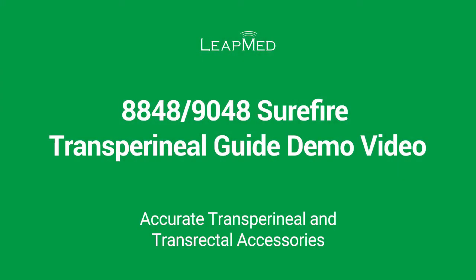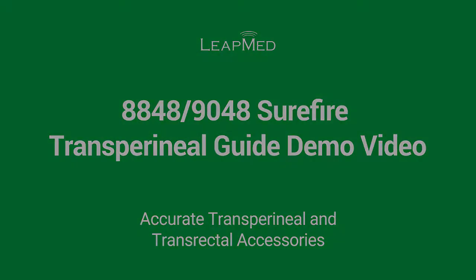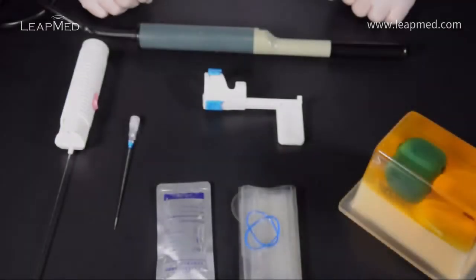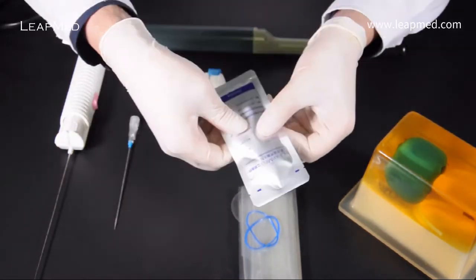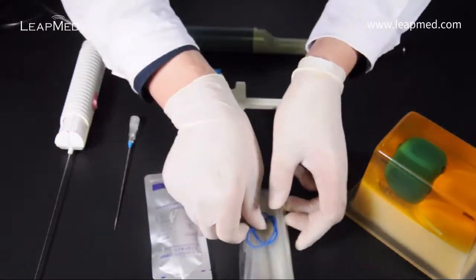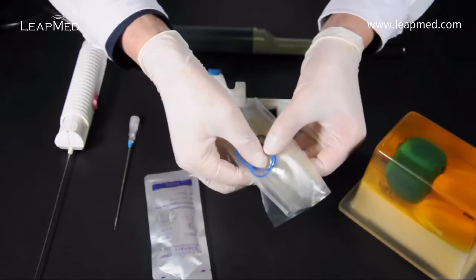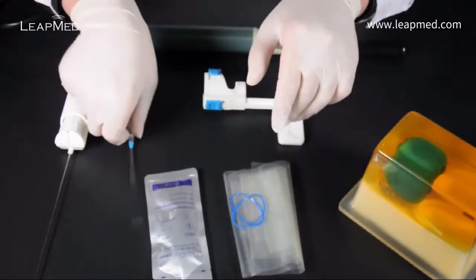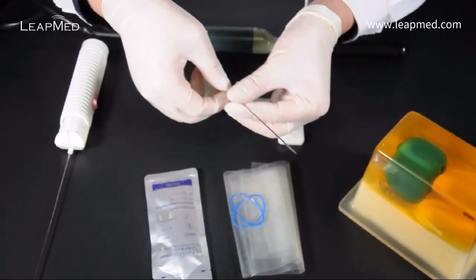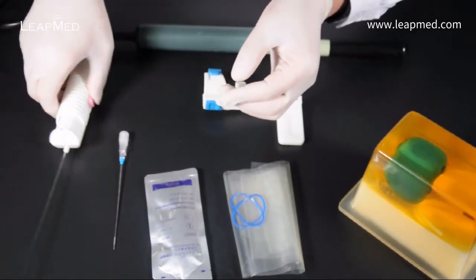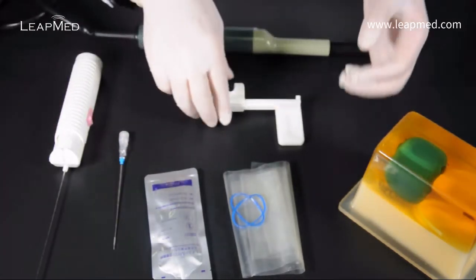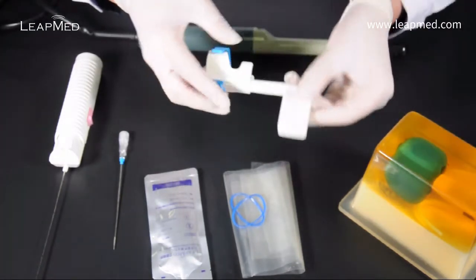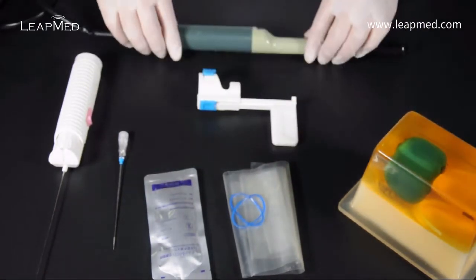The Surefire Transperineal Guide by LeapMed. The products used for transperineal prostate biopsy include sterile gel, probe cover and elastic band, coaxial introducer needle, an automatic biopsy needle and the needle guide or bracket, in this case the Surefire Needle Guide from LeapMed and the ultrasound probe.